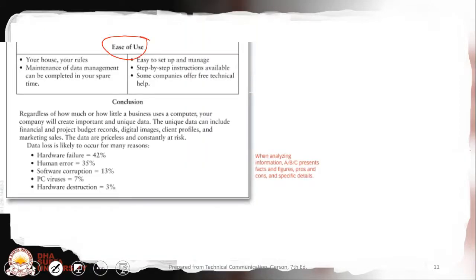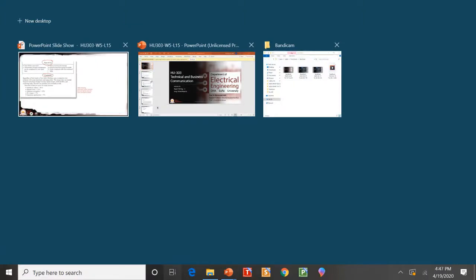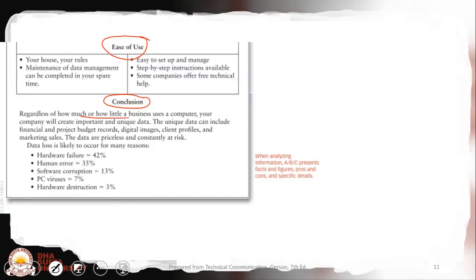For the analysis, you include statistical data showing data loss is likely to occur for many reasons. For example, hardware failure 44%, human error 35%, software corruption 13%, PC viruses 7%, and hardware destruction 3%. All these are statistical possibilities that can happen.